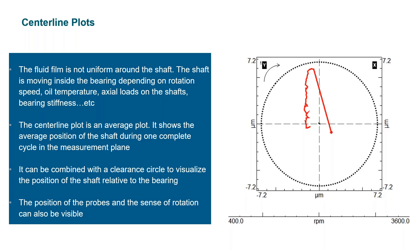And the centerline plot will show the average position of our shaft during one complete cycle in the measurement plane. As you can see on the right, it can be combined with what we call clearance circle, which helps to visualize the position of the shaft relative to the bearing.